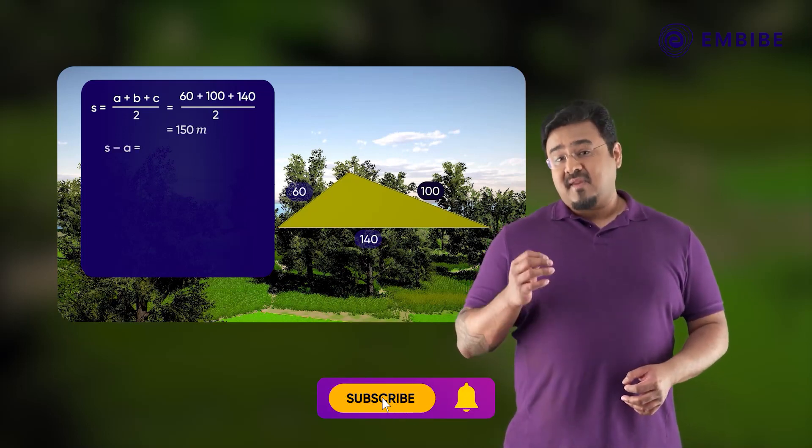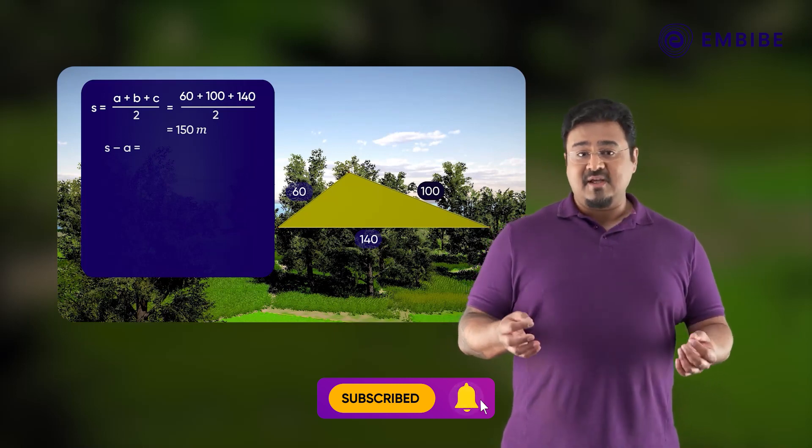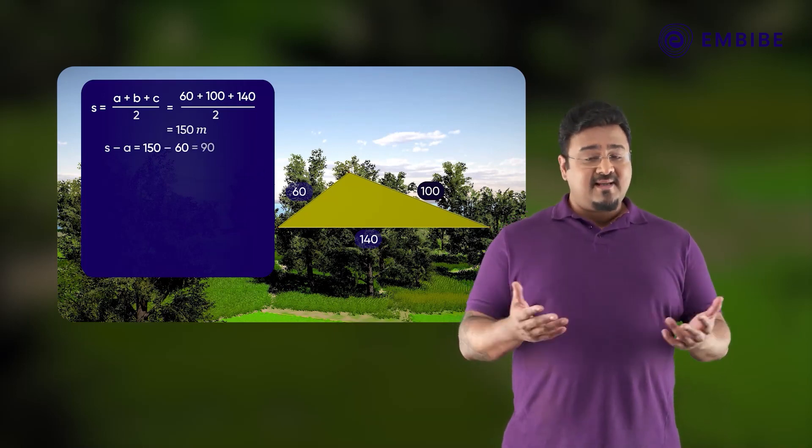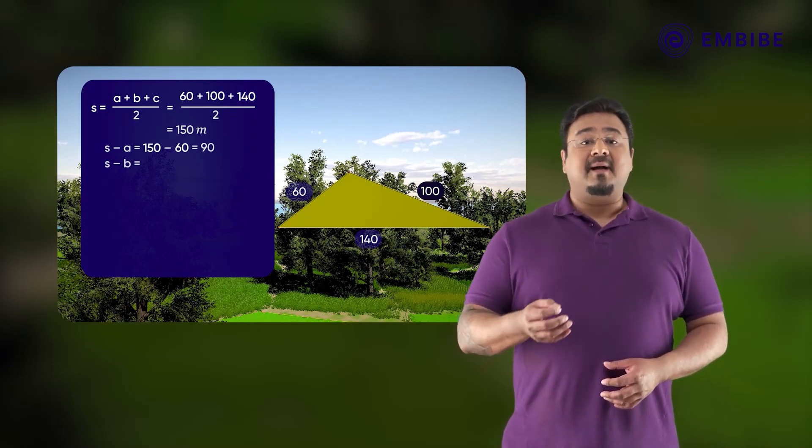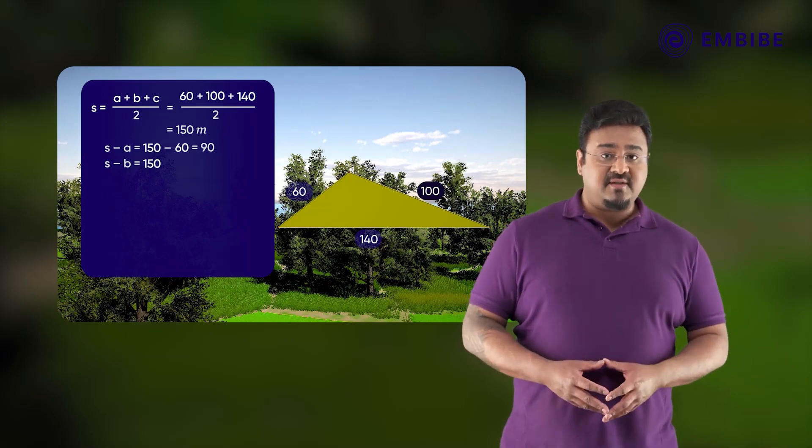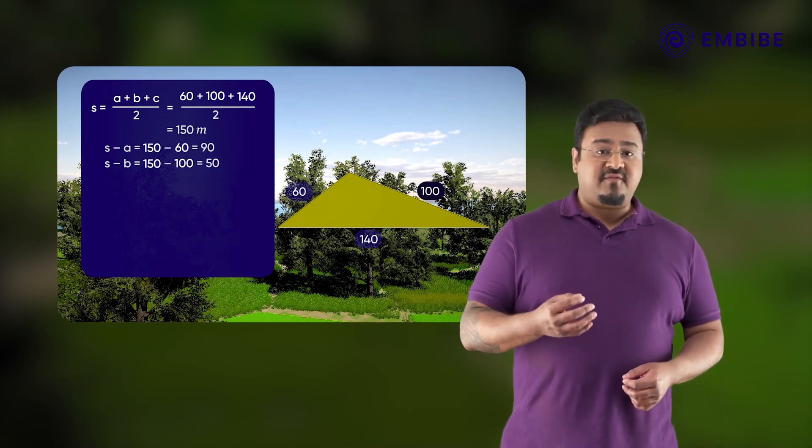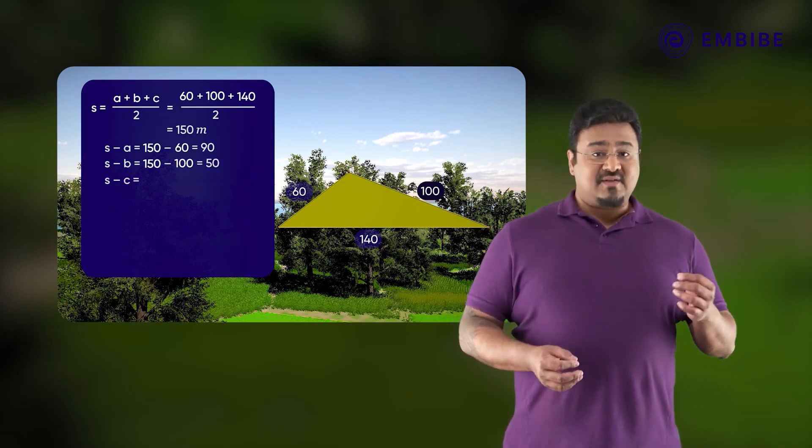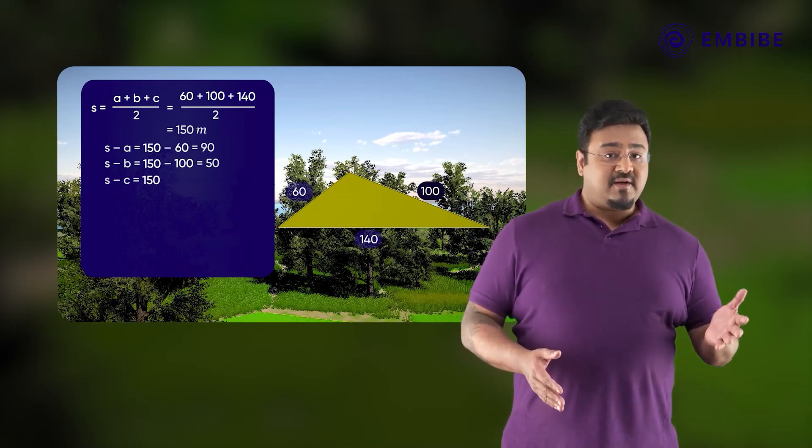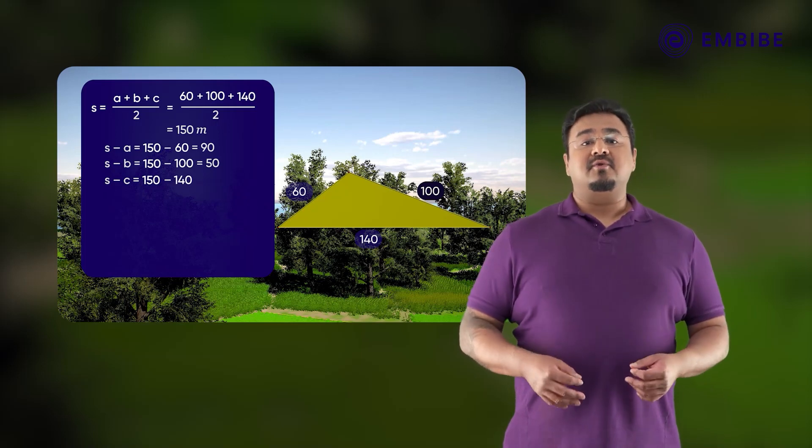Now, S minus A is equal to 150 minus 60 equal to 90. S minus B is equal to 150 minus 100 equals to 50. S minus C is equal to 150 minus 140 equal to 10.